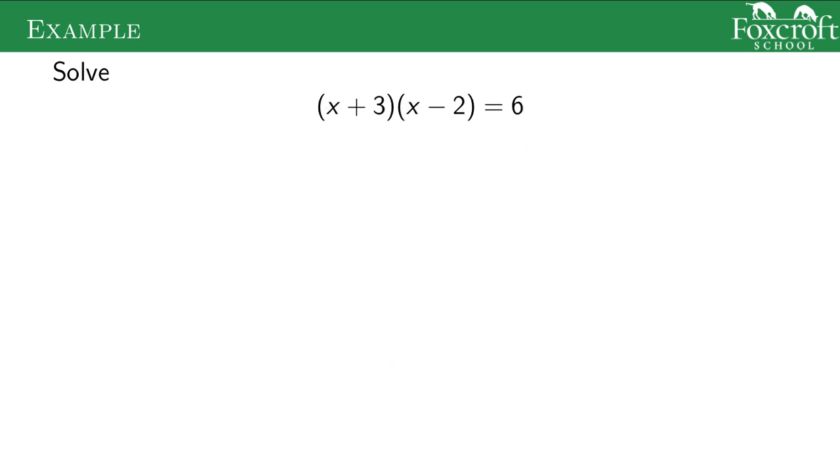This example is just kind of a warning sign. The most popular wrong answer for this problem would be negative 3 and 2 for your final answer, because you do the 0 product property and you get your answer. The only problem is you can't do the 0 product property because there's a 6 over here. How do we go about this one? We have to do a bunch of simplifying in this case. We need to try to get 0 on one side.